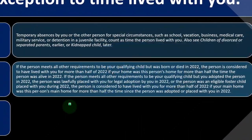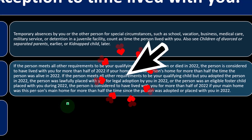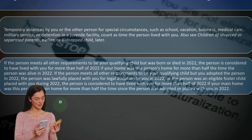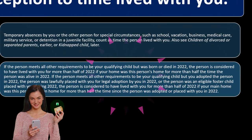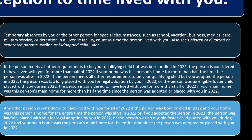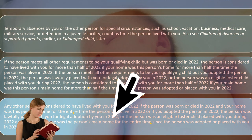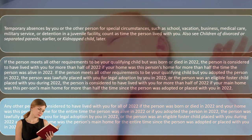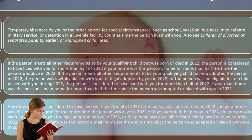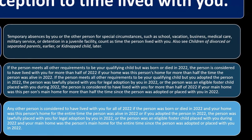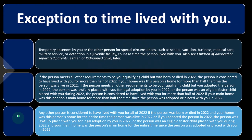If the person meets all other requirements to be your qualifying child, but you adopted the person in 2022, the person was lawfully placed with you for legal adoption in 2022, or the person was an eligible foster child placed with you during 2022, the person is considered to have lived with you for more than half of 2022 if your main home was this person's main home for more than half the time since the person was adopted or placed with you in 2022.